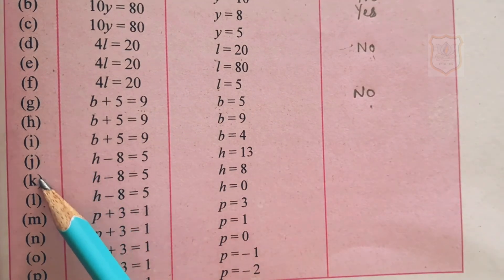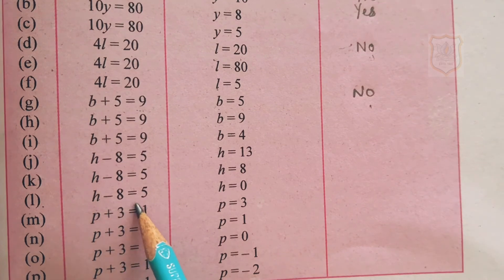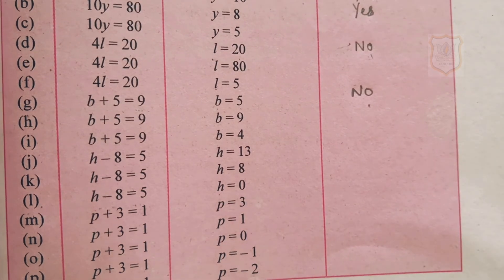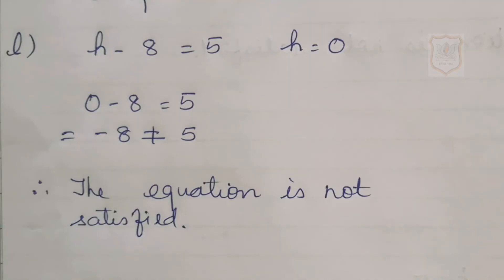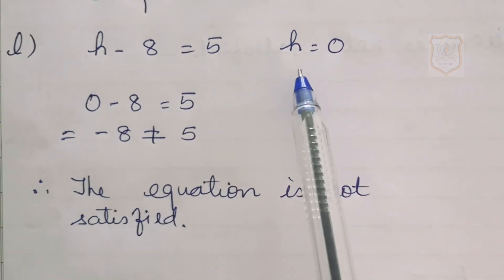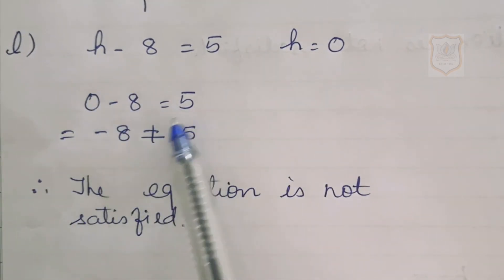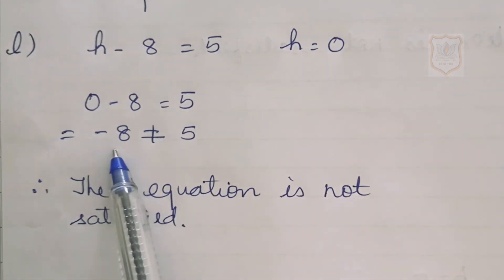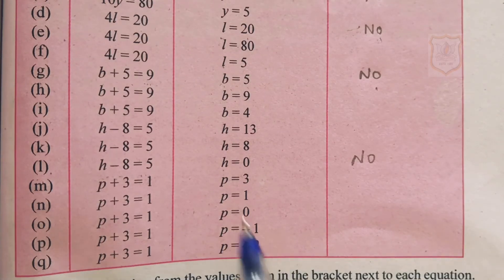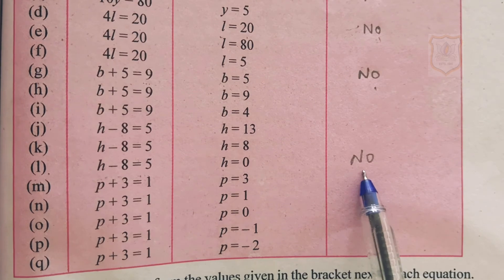Parts H, I, J, K of question number 2 you have to do by yourself. Part L: H minus 8 equals 5, where the value of H is 0. We substitute 0 in place of H, so 0 minus 8 equals 5. By subtracting, we get minus 8, and minus 8 is not equal to 5. Therefore, the equation is not satisfied — answer is no.